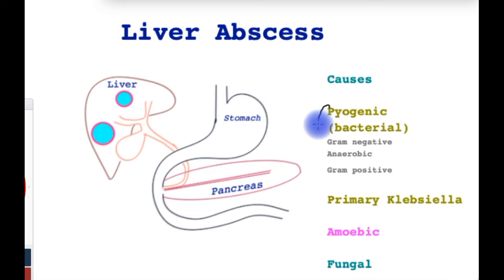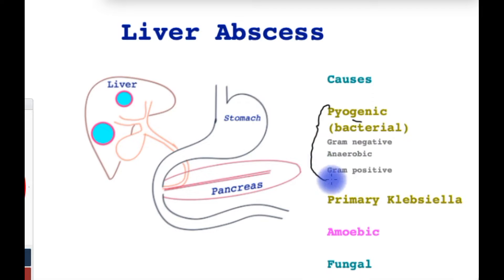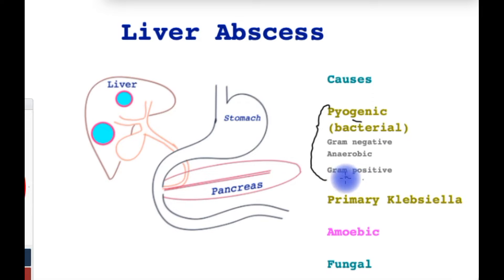By far the great majority of liver abscesses occur as a result of infection with bacteria. These are called pyogenic liver abscesses, referring to pus-forming bacteria. Commonly these are bacteria that originate within the gut, such as the gram-negative bacilli, the anaerobes, and sometimes the gram-positive organisms depending on the cause.